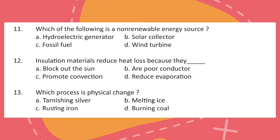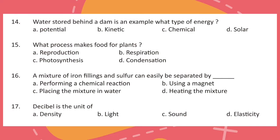Question 13. Which process is a physical change? Question 14. Water stored behind a dam is an example of what type of energy? Question 15. What process makes food for plants? Question 16. A mixture of iron filings and sulphur can easily be separated by what?